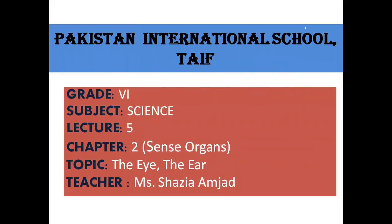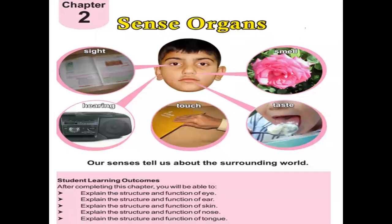You all know that sense organs are helpful for sensing the surrounding. This is your second chapter. You might have studied sense organs from the start of your classes, like in class one, two, three, four, five. Sense organs are those organs that tell us about the surrounding world. We can sense different things according to the situation and that makes our lives wonderful.